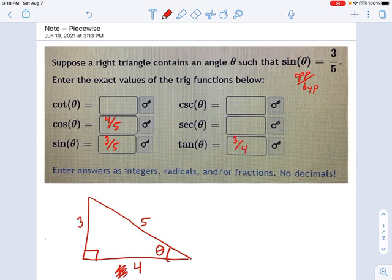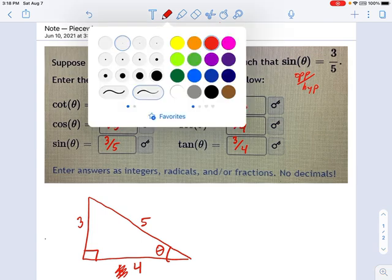And now all that's left is these reciprocal functions. Just flip your fractions over and line them up right. So tangent goes with cotangent. That's going to be four thirds. Secant goes with cosine. So that'll be five over four. And cosecant goes with sine. That'll be five over three. And at this point, we're done.